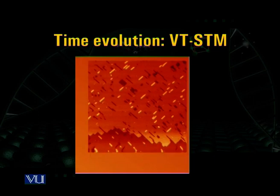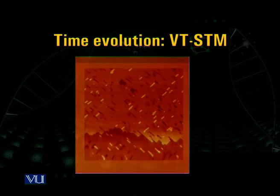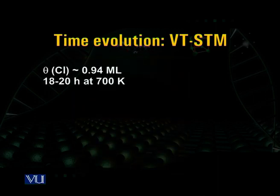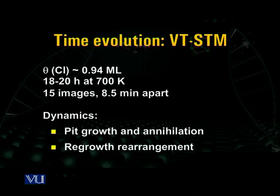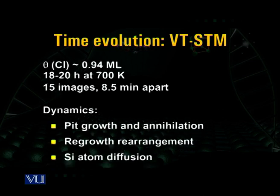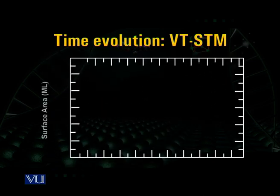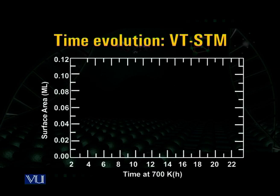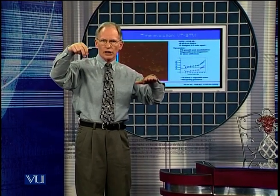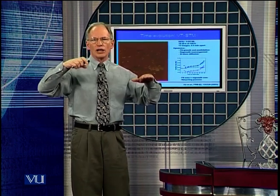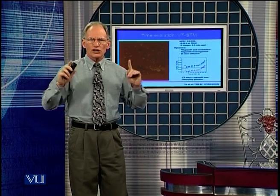Scanning tunneling microscopy can be done at elevated temperature, where you can watch movies of things changing. A movie shows a silicon surface slightly reacted with chlorine at 700 Kelvin, with only eight and a half minutes between scans. The bright features are silicon atoms that have come from where the dark ones are — they've gone onto the terrace, left behind a pit, and formed an island. You can see how those islands and pits change and think about the energetics of each process.